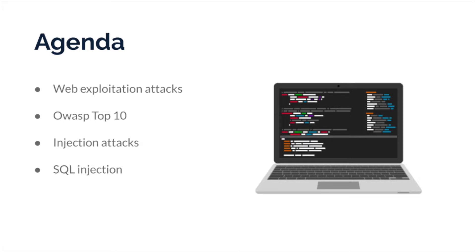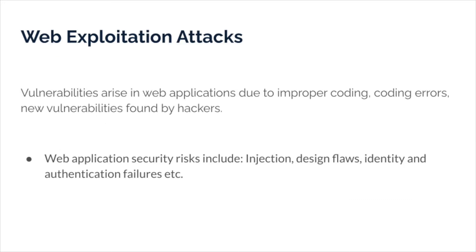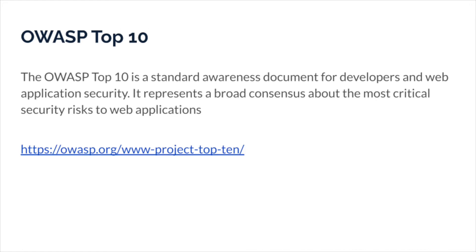So how do web application attacks take place? Web exploitation attacks take place when vulnerabilities arise in web applications due to improper coding, coding errors, or new vulnerabilities found by hackers. Examples of some of these security risks include injection, identity, and authentication failures. A really good resource to learn about some of these attacks is OWASP Top 10, which is a standard awareness document for developers and web application security. It represents a broad consensus about the most critical security risks to web applications.